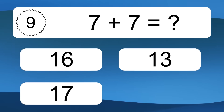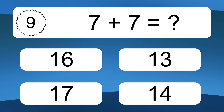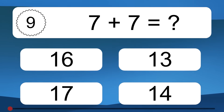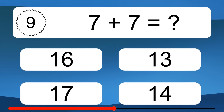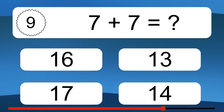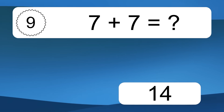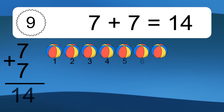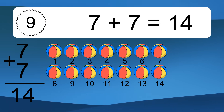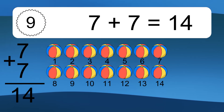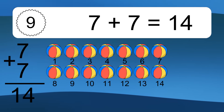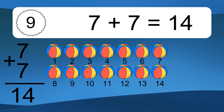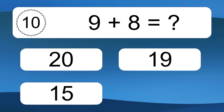7 plus 7 equals what? Let's count it: 1, 2, 3, 4, 5, 6, 7, 8, 9, 10, 11, 12, 13, 14.